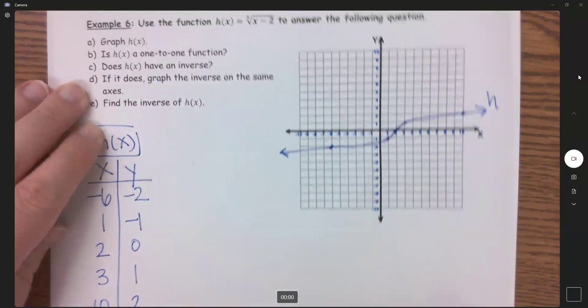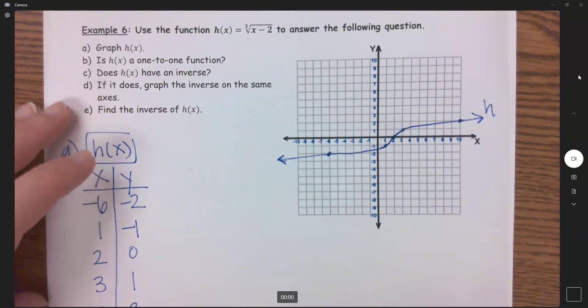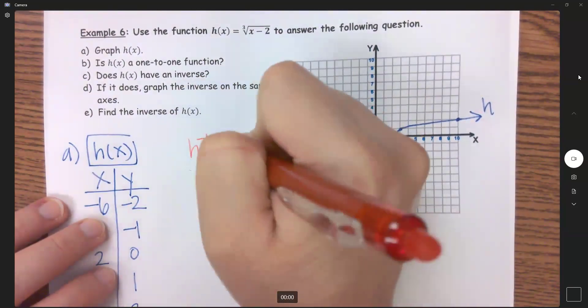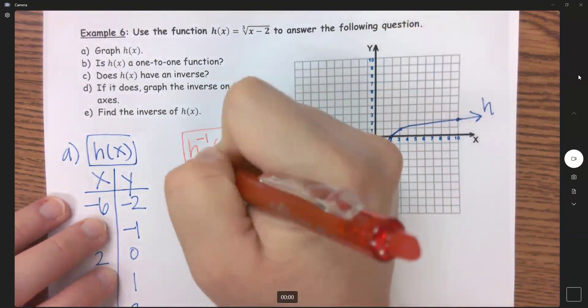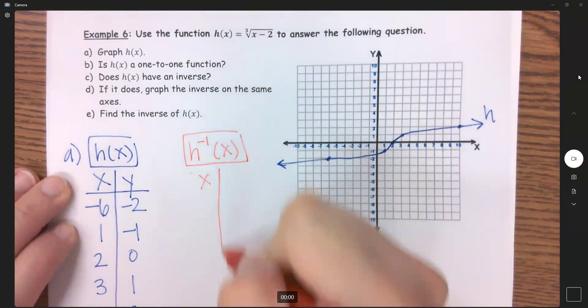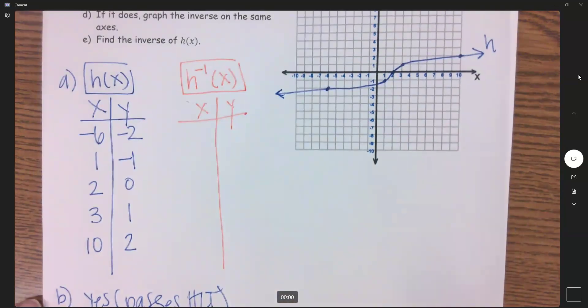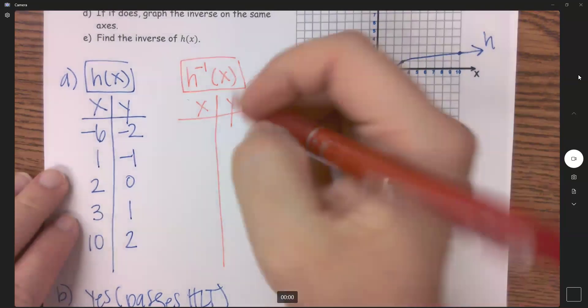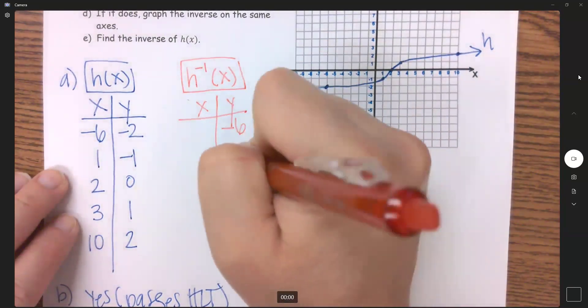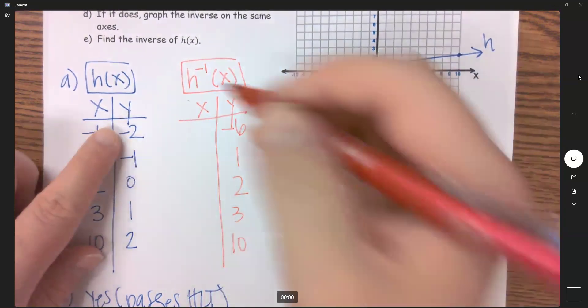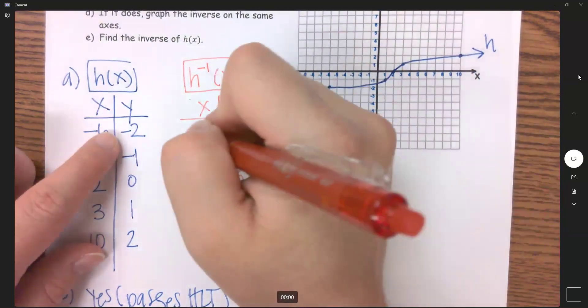So now part D, if it does, graph the inverse on the same axis. So to find my inverse here, I'm going to switch my ordered pairs. So my X column will become my Y column. And then my Y column will become my X column.